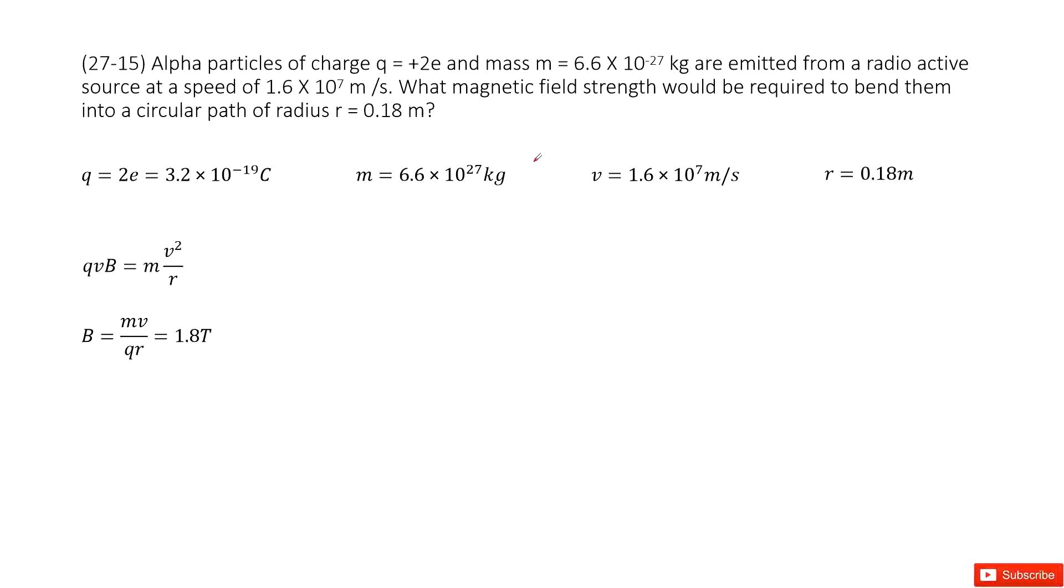So we have alpha particles doing circular motion in the magnetic field. The given quantity is the charge of the alpha particles, two unit charge.